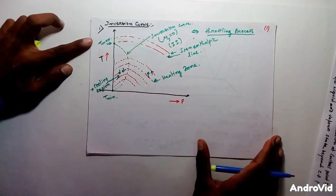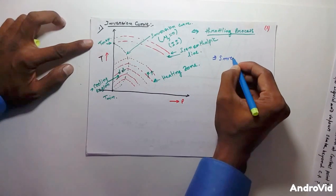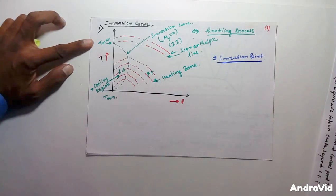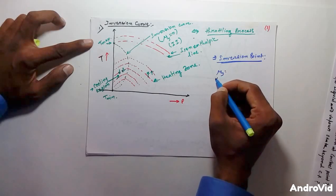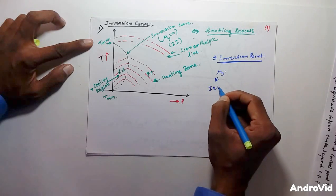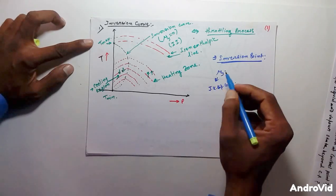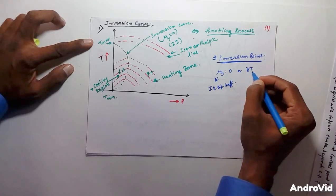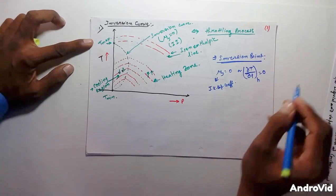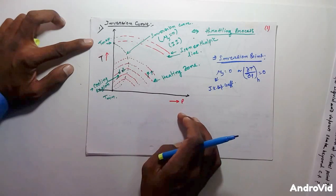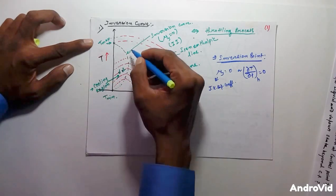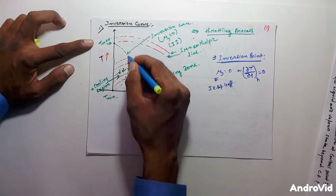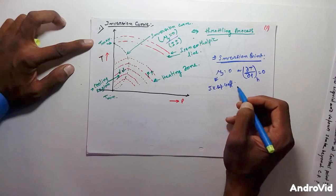The next question is: what is the inversion point? The inversion point is a point at which the value of the Joule-Kelvin expansion coefficient is zero, or the value of del T by del P at constant enthalpy is zero. I described the TP diagram in my previous lecture — this is the inversion curve, and along this line we get the inversion point where mu equals zero.